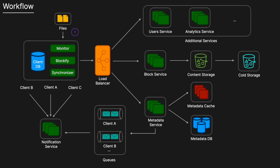Walking through the workflow for upload and download: Step 1, a user makes changes to their file, which is picked up by the Monitor. The Blockify service converts the changes into blocks, and the Synchronizer sends them to the Block Service, which compresses and encrypts the blocks and stores them in content storage. The Synchronizer also reaches out to the Metadata Service, which stores the metadata information in the cache, the database, or both. The Metadata Service then sends that information to the relevant queues.